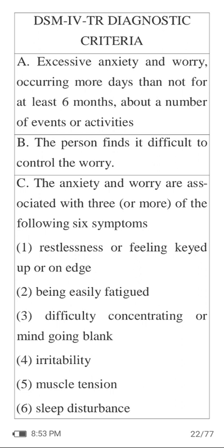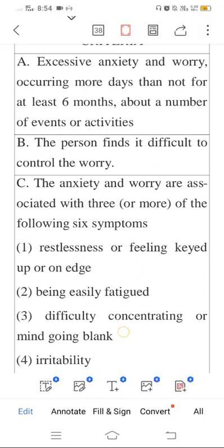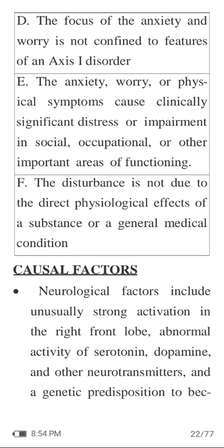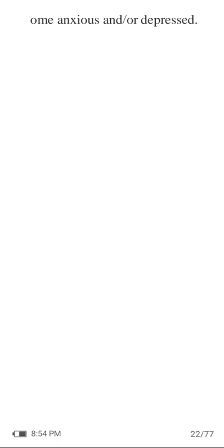The anxiety and worry are associated with three or more of the following six symptoms: restlessness or feeling keyed up or on edge, being easily fatigued, difficulty concentrating or mind going blank, irritability, muscle tension, and sleep disturbance. The focus of the anxiety and worry is not confined to features of another disorder. The anxiety, worry, or physical symptoms cause clinically significant distress or impairment in social, occupational, or other important areas of functioning, and the disturbance is not due to the direct physiological effect of a substance or a general medical condition. Causal factors: neurological factors include unusually strong activation in the right frontal lobe, abnormal activity of serotonin, dopamine, and other neurotransmitters, and a genetic predisposition to become anxious and depressed.